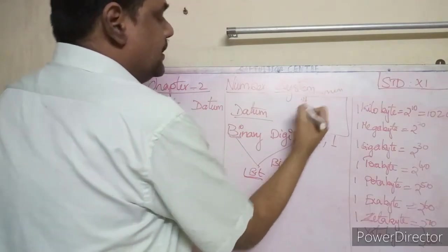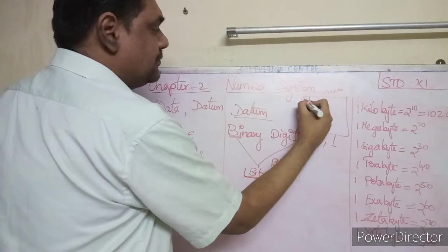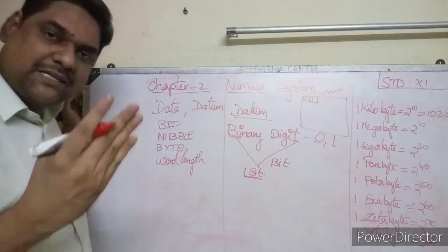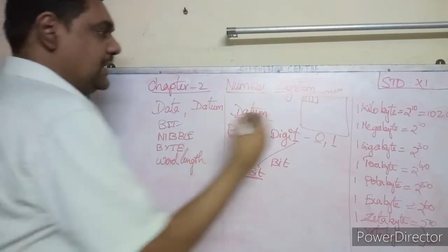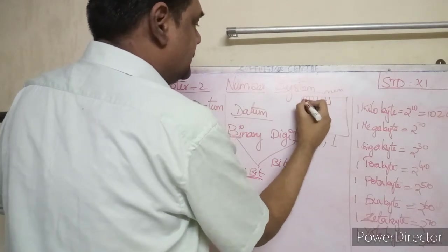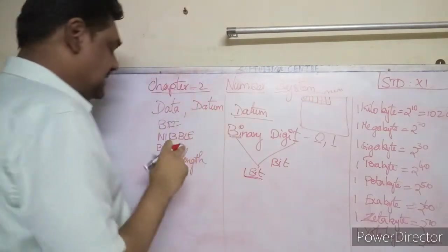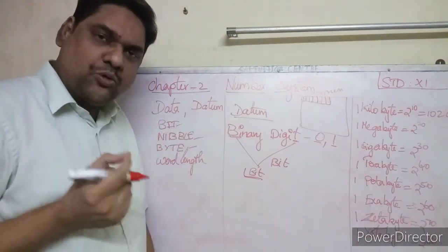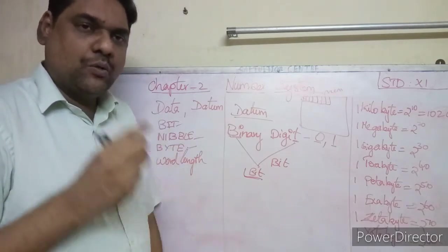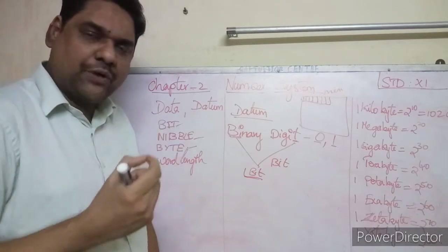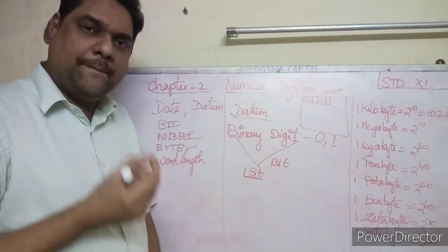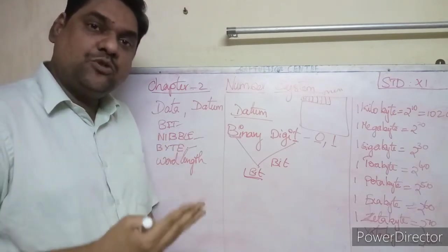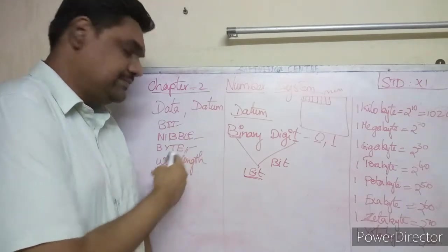One bit is the smallest place in memory where you can store either zero or one. Four bits together is called one nibble. Eight bits together is called one byte.